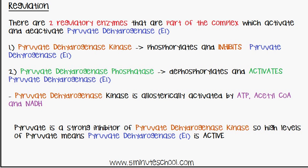Pyruvate itself is a strong inhibitor of pyruvate dehydrogenase kinase, so when you have high levels of pyruvate, pyruvate dehydrogenase E1 is active. When pyruvate dehydrogenase kinase phosphorylates and inhibits E1, pyruvate is not being converted to acetyl-CoA. When pyruvate dehydrogenase phosphatase dephosphorylates and activates E1, the complex is in action and pyruvate is being converted into acetyl-CoA.